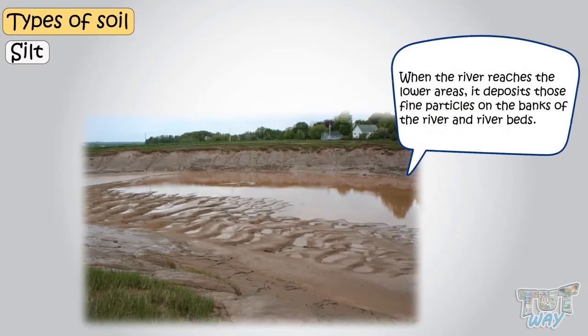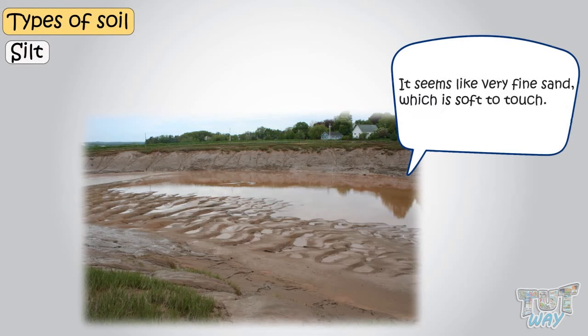When the river reaches lower areas, it deposits those fine particles on the banks of the river and riverbeds. It seems like very fine sand, which is soft to touch. And this deposited sand is called silt.